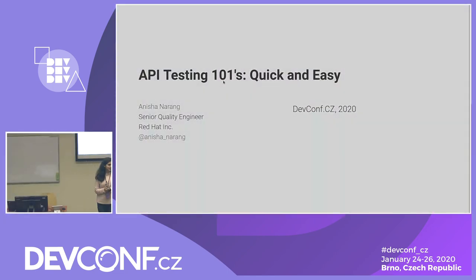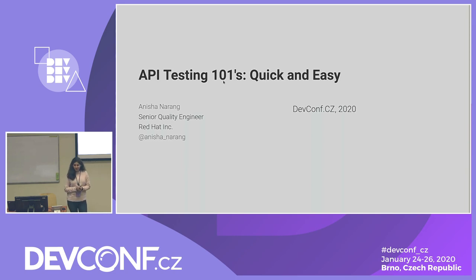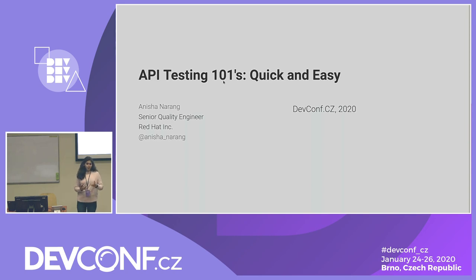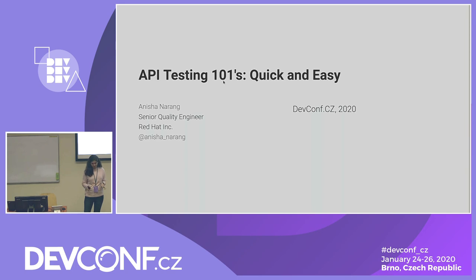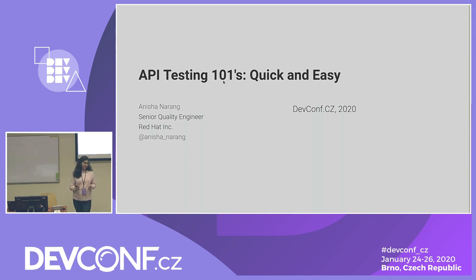Hi everyone, good evening. I am Anisha Narang and I work as a senior quality engineer with Red Hat. I've been with Red Hat for over six years now. I work with different test automation tools including Selenium, Python, Protractor, Water, and Ruby. I've spoken at different tech conferences on topics related to quality engineering, and this is my tenth talk. Outside of work, I've recently started travel blogging and self-guided yoga.